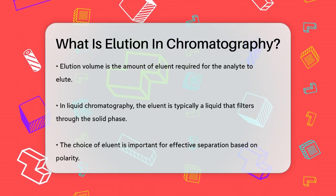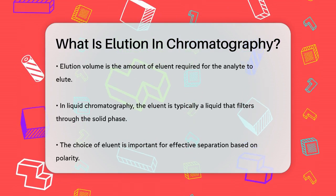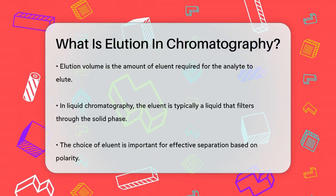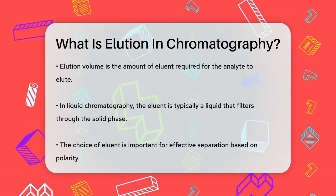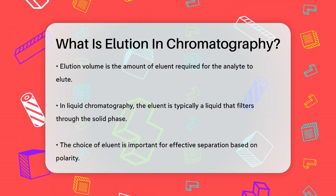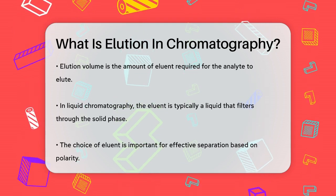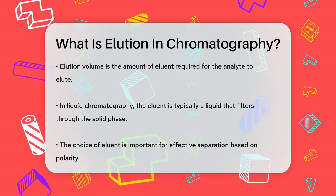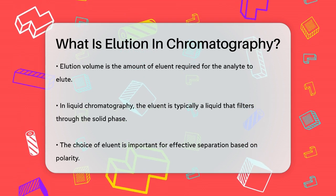In summary, elution in chromatography is a precise method of separating and identifying the components of a mixture by using a solvent to wash them through a column, allowing each component to emerge at a specific time based on its interactions with the stationary phase.